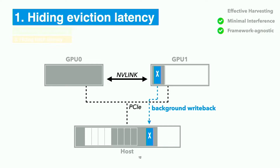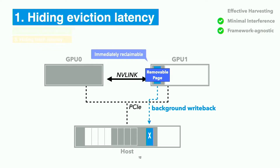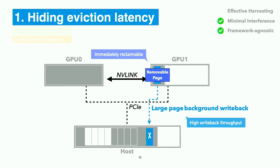When the application running on the neighbor GPU increases memory allocation, we should instantly reclaim harvested memory with negligible overhead to minimize interference. Thus, we make a copy of evicted pages in harvested memory to host memory in a background writeback thread. When writeback is completed, the page is marked removable and can be returned to the neighbor GPU without additional overhead. To minimize interference, it is crucial to quickly make pages removable. To increase writeback throughput, MemHarvester allocates large pages in host memory and performs a single operation for populating large pages.